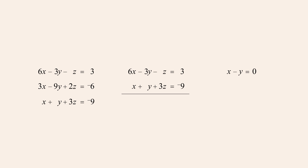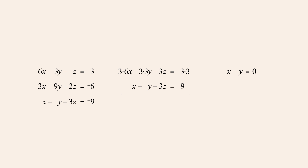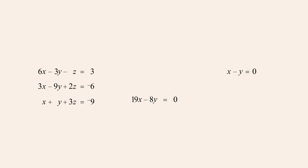We then repeat this process with a different pair of equations, giving us a second equation in the same two variables. This time we'll use the first and third equations and once again eliminate z. Multiplying the first equation by three and adding the equations gives us nineteen x minus eight y equals zero.